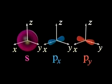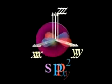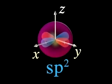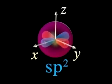Mixing of an S with the PX and PY orbitals produces three equivalent hybrid orbitals in the XY plane. We call these SP2 hybrid orbitals.